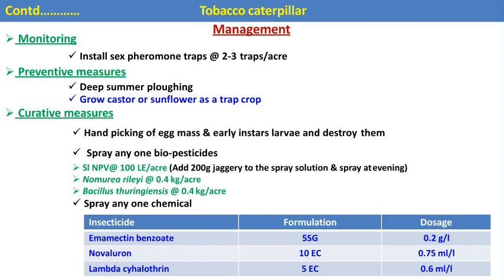Preventive measures for tobacco caterpillar include deep summer plowing and growing castor or sunflower as trap crops. In curative control: collect and destroy egg masses and early instar larvae of Spodoptera litura. Biopesticides include SLNPV (Spodoptera litura Nuclear Polyhedrosis Virus — an entomopathogenic virus), Nomuraea rileyi (entomopathogenic fungus), and Bacillus thuringiensis (entomopathogenic bacterium). Recommended chemical insecticides are emamectin benzoate, novaluron, and lambda-cyhalothrin against Spodoptera litura.